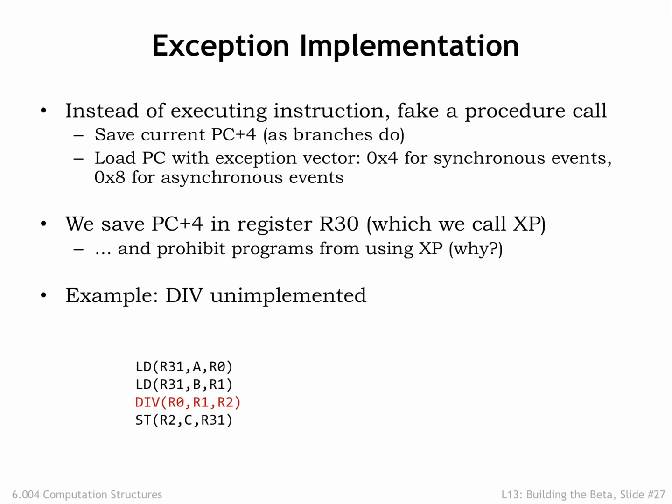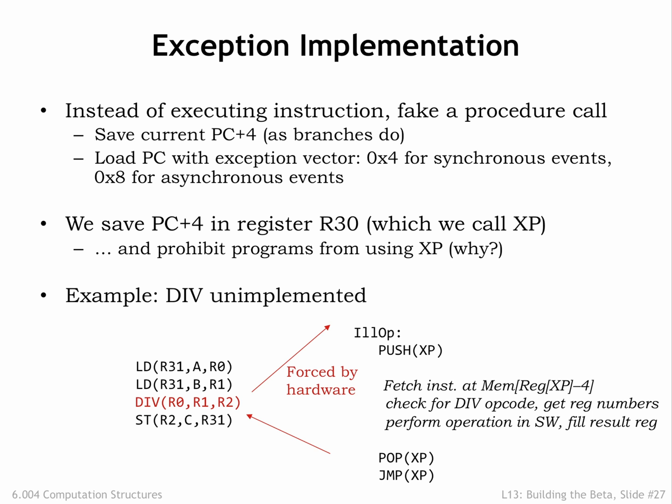Here's how this scheme works. Suppose we don't include hardware to implement the DIV instruction, so it's treated as an illegal opcode. The exception hardware forces a procedure call to location 4, which then branches to the ILOP handler. The PC+4 value of the DIV instruction has been saved in the XP register so the handler can fetch the illegal instruction and, if it can, emulate its operation in software. When the handler is complete, it can resume execution of the original program at the instruction following DIV by performing a jump XP.